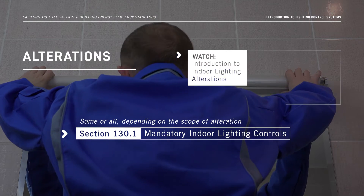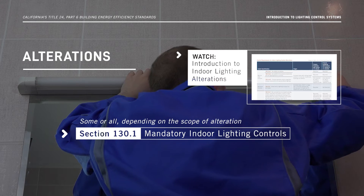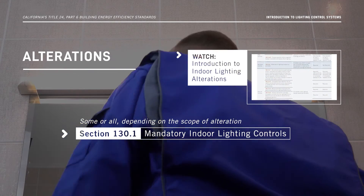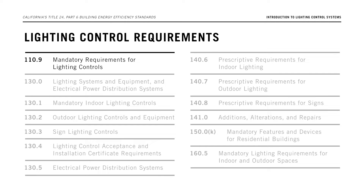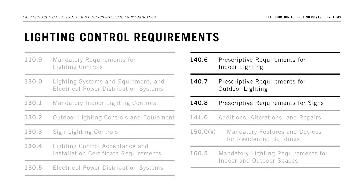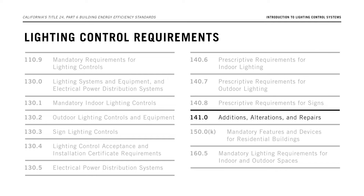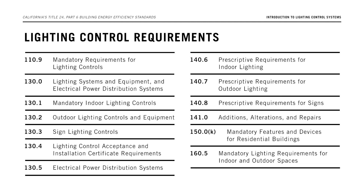Learn more about alterations in our Introduction to Indoor Lighting Alterations video. The energy code contains lighting control requirements in Section 110.9, Sections 130.0 through 130.5, Sections 140.6 through 140.8, Section 141.0, Section 150k, and Section 160.5. These sections will tell you when and where lighting controls are required and how they must operate.